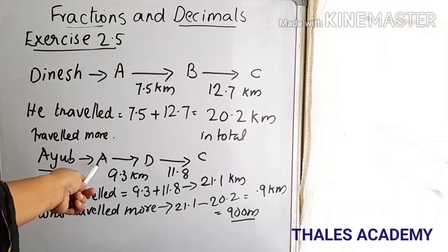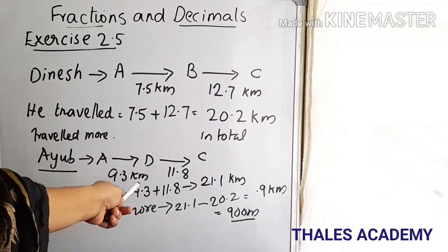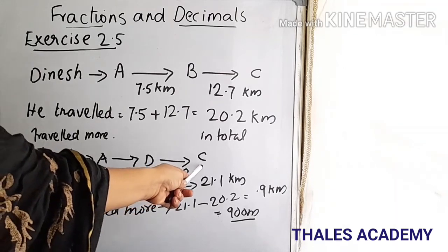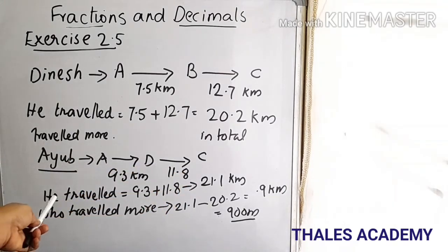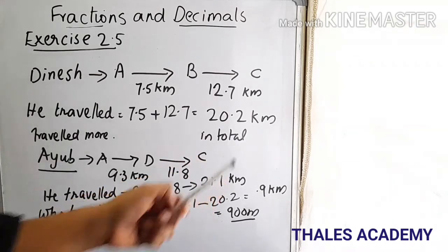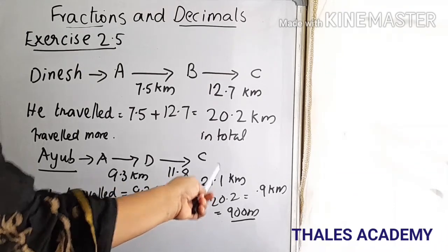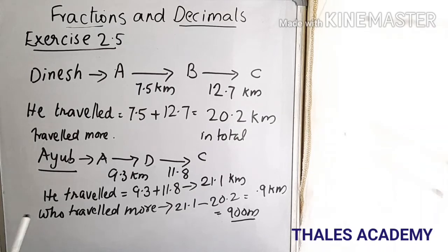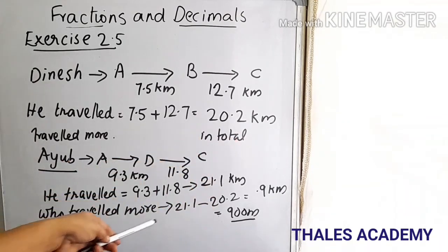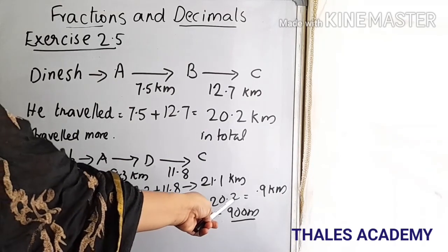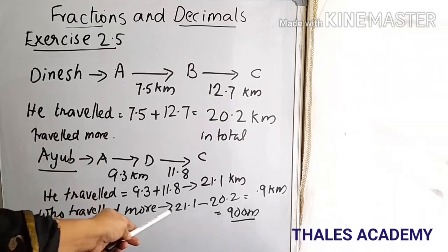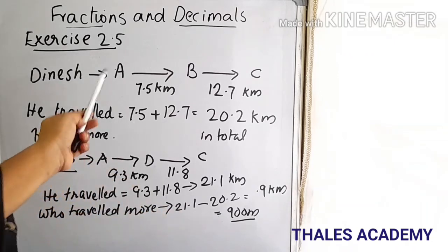The other person travelled from A to D (9.3 km) and from D to C (11.8 km), for a total of 9.3 plus 11.8 equals 21.1 km. To find who travelled more, we subtract: 21.1 minus 20.2 equals 0.9 km, or 900 meters more than Dinesh.